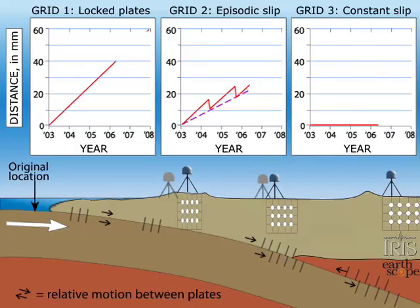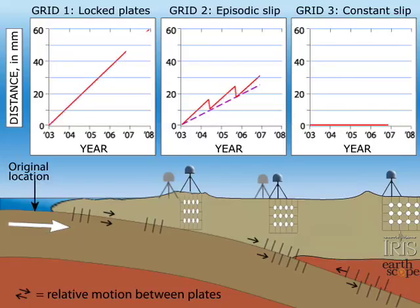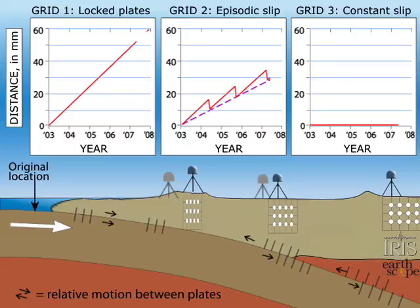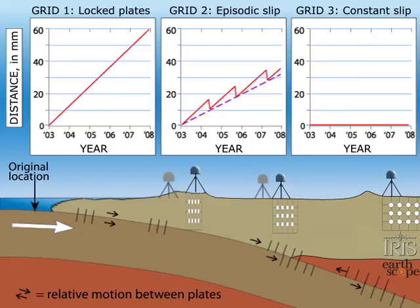Graph 2 shows the land being forced inland due to friction between the plates, but it occasionally backslides along the plate boundary, releasing some of its stored elastic energy in mild seismic tremors spread over a period of days to weeks. The sawtooth pattern on the graph reflects the forward-backward motion of the GPS station on the surface.